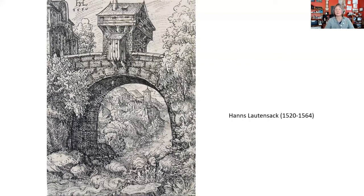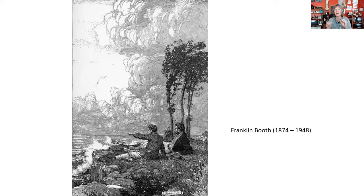Moving on, I wanted to show a couple of pieces by Franklin Booth, who took the idea of directional strokes to the nth degree. Almost nothing in this illustration is a pure black — everything is a very tightly controlled value, crosshatched with very close lines. Look at those clouds — now he used diluted ink to do them. So it's not just a matter of using a finer pen; you can also change your ink consistency to get a different look. Sometimes artists will add different ink colors together — a terracotta color and a black, for example — to get different effects.